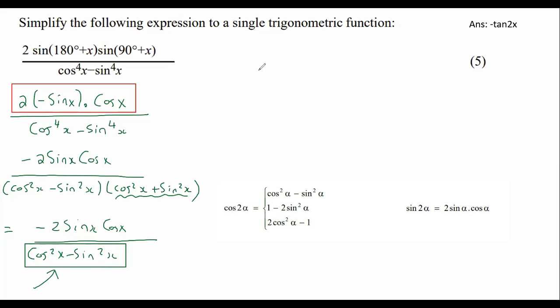And so I'm going to change. So I'm going to leave the top as minus 2 sin x cos x. And then the bottom, I'm going to change that to cos 2x.